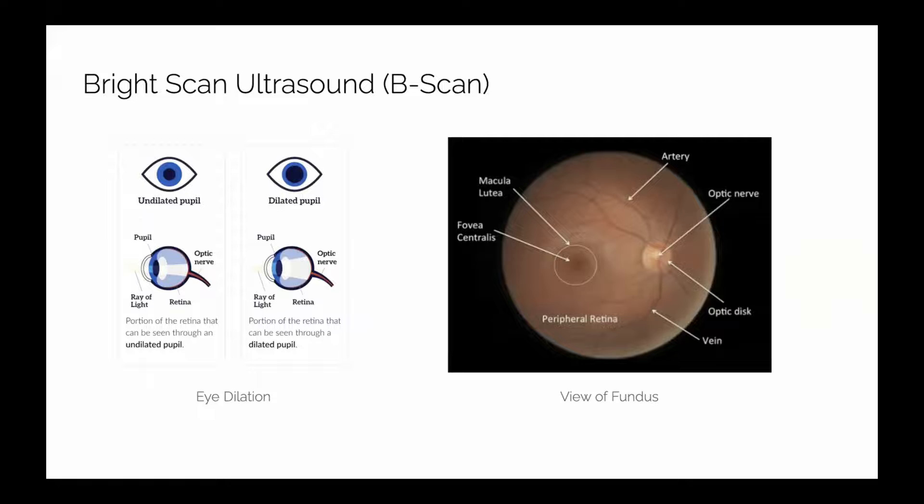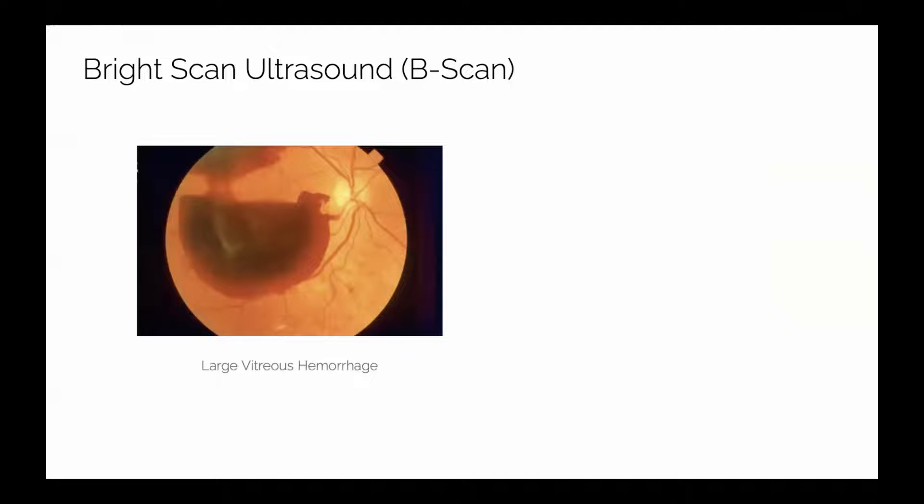This is what the ophthalmologist is trying to look at when they do a dilated exam. If there's anything in the way where they can't see the back of your eye, they'll order a B-scan because they want to know what's going on. A couple examples: a large vitreous hemorrhage. Say they dilate a person and all they see is a bunch of blood. They need to still assess if there's a retinal detachment hiding back there. So they will order a B-scan in the clinic same day, bring the patient back, and go over the ultrasound results.